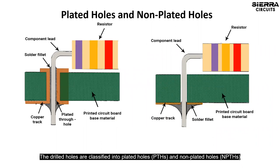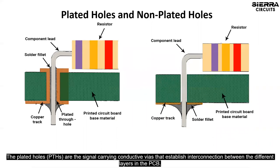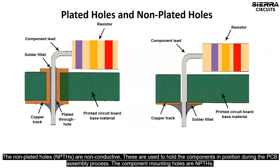Plated holes and non-plated holes. The drilled holes are classified into plated holes and non-plated holes. The plated holes are the signal-carrying conductive vias that establish interconnection between the different layers in the PCB. The non-plated holes are non-conductive and are used to hold the components in position during the PCB assembly process. The component mounting holes are NPTHs.